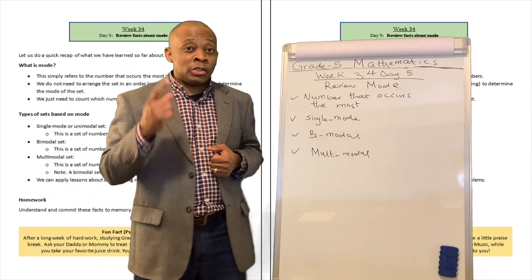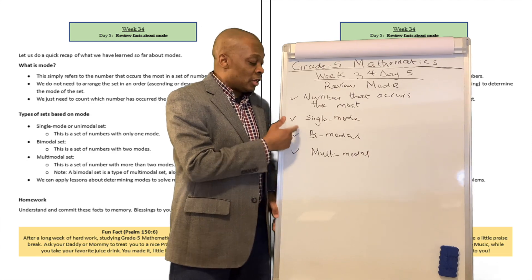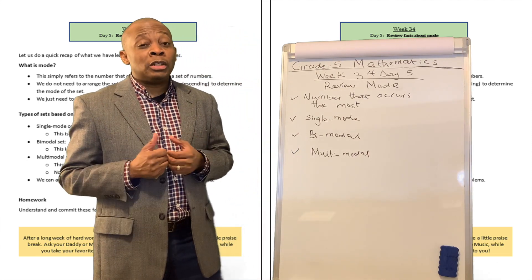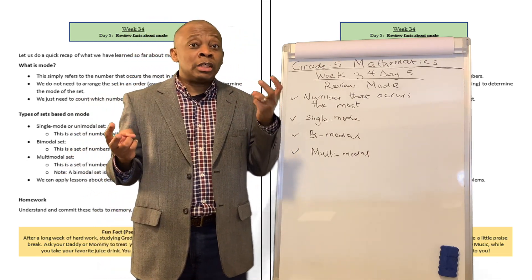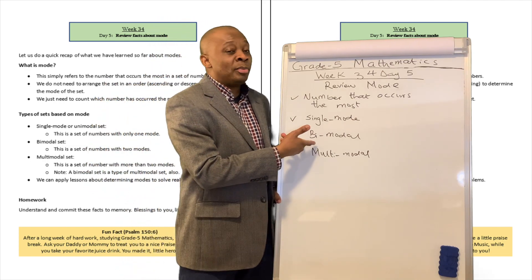Now, if that set has just one mode, it's going to be called a single mode. If it has two modes, in other words, there are two sets of numbers that occur with the exact same frequency, well that's going to be bimodal.